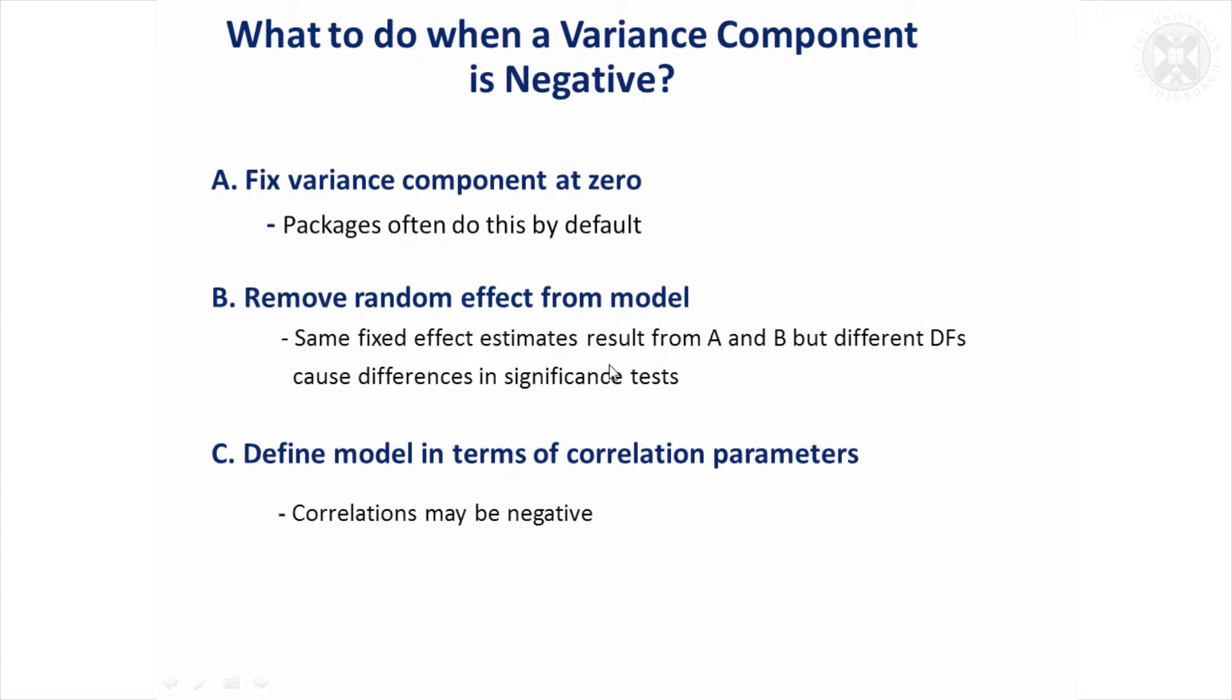So what do you do in that situation? Well, the usual thing that's done is you say, in the assumptions I made about this model, I can't believe that there's negative variance here, there's less variance than expected by chance, so we'll fix the variance component at zero. And in fact most packages do this by default. Most of the packages I've come across will do this by default, but will optionally allow you to have a negative variance component if you want to, but you have to bear in mind that's not really permitted given the model you set up.